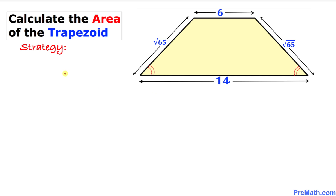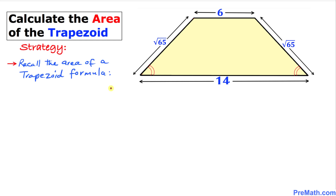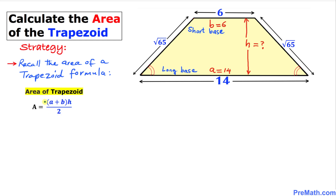Here is the action plan we are going to follow for this problem. Let's recall the area of a trapezoid formula: A equals (a plus b) times H divided by 2. In our case, a is 14 and b is 6.